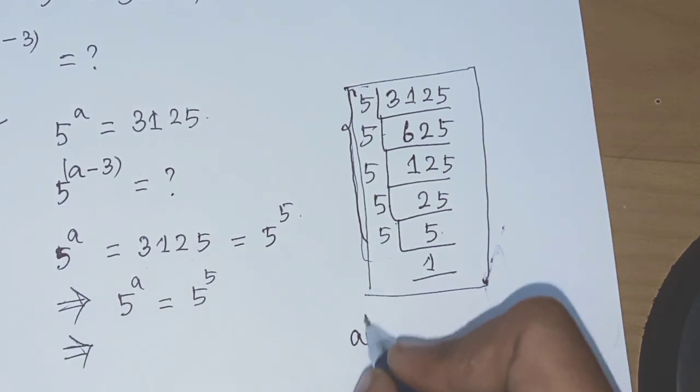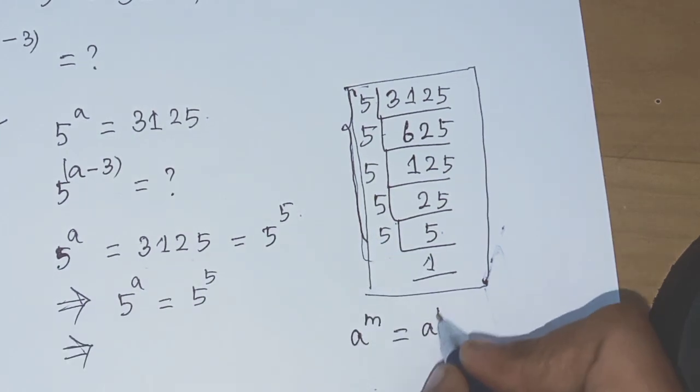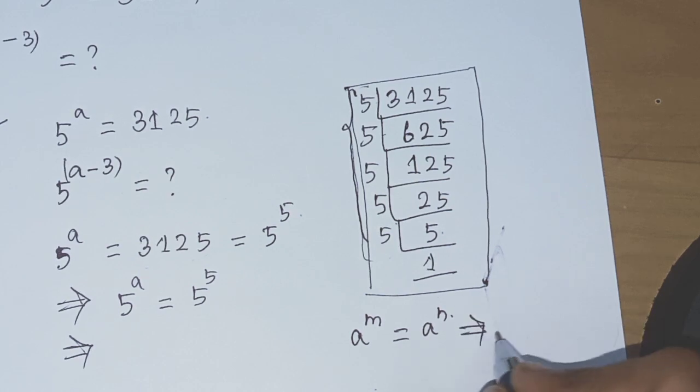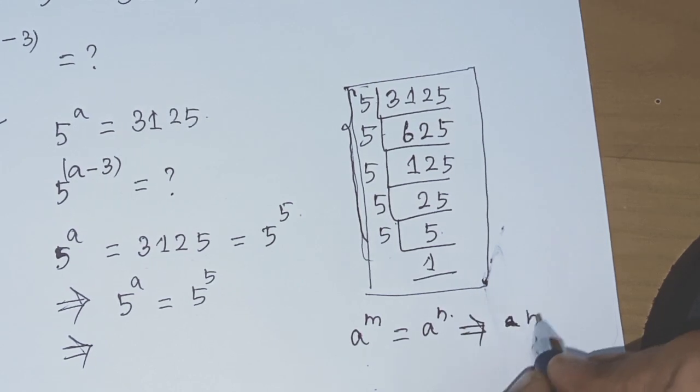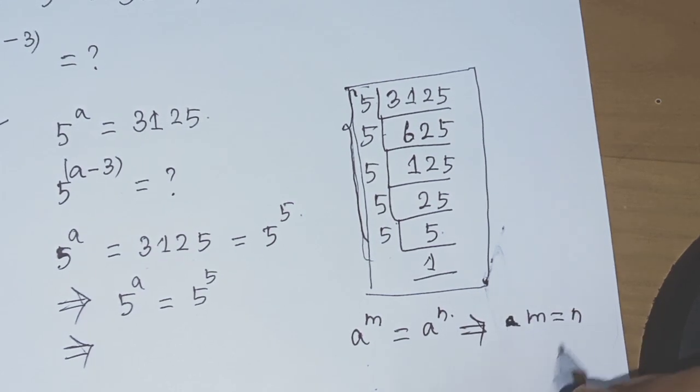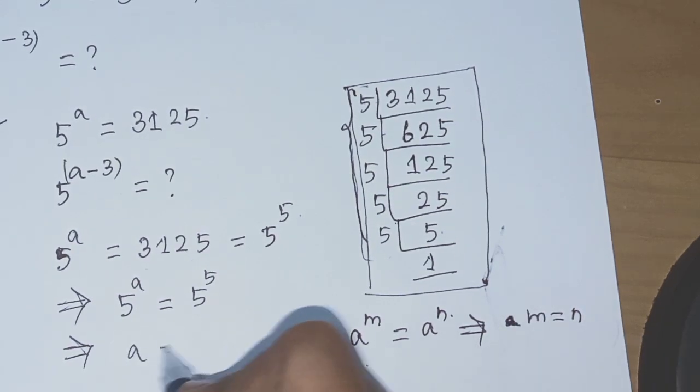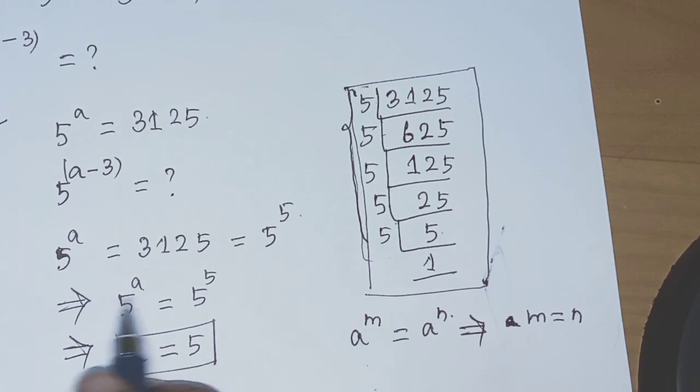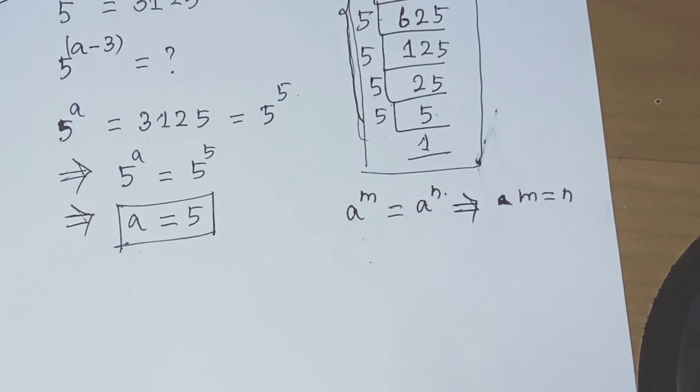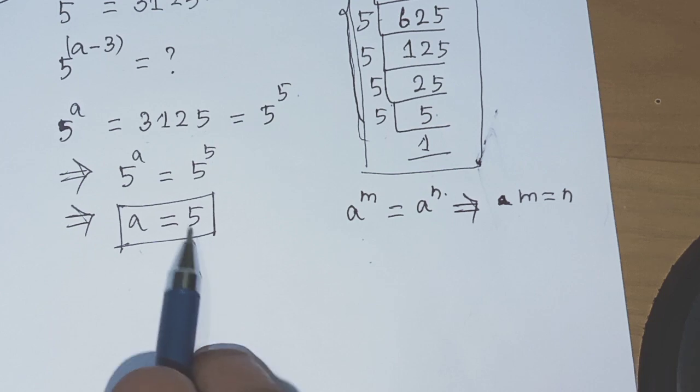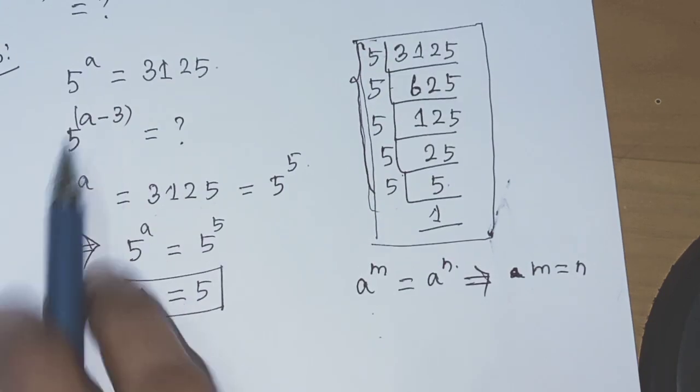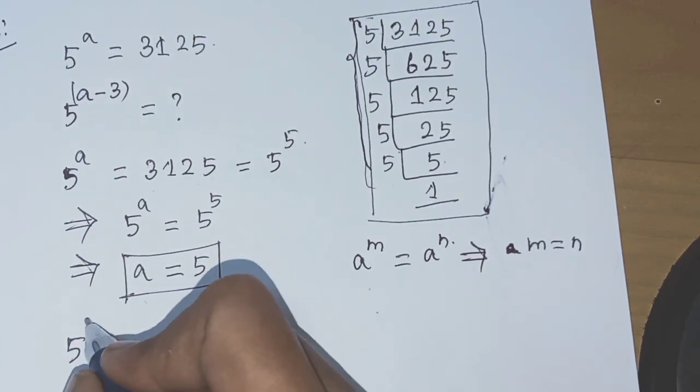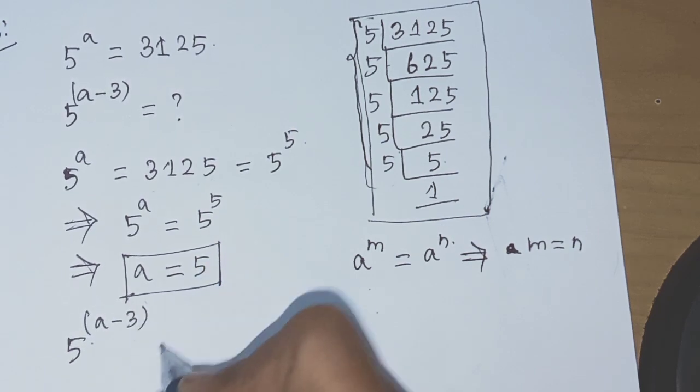So 5 power A equals 5 power 5, which means A equals 5.